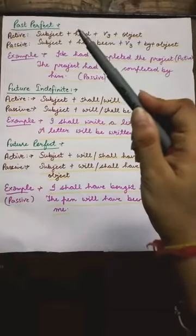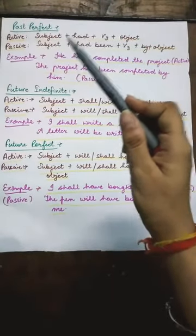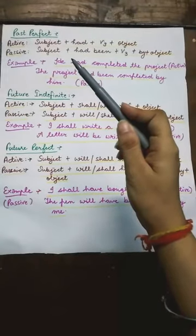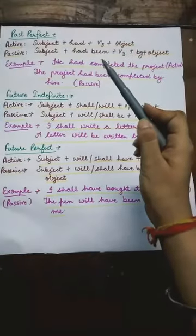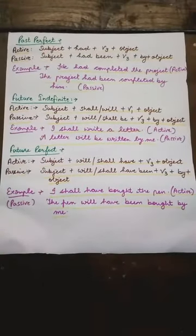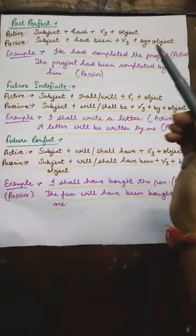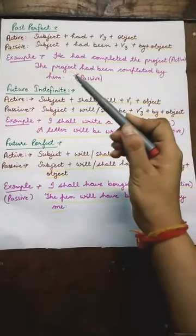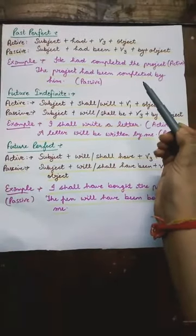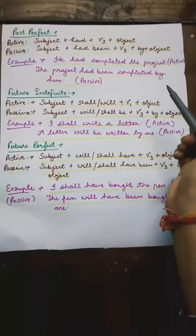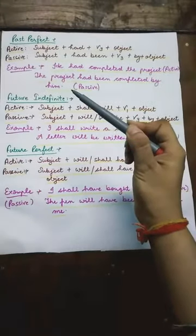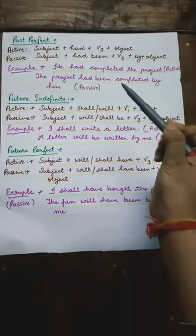The next tense is past perfect tense. Active sentence का rule होता है: subject + had + third form of verb + object. Passive में: subject + had been + third form of verb + by + object. Example: 'He had completed the project.' जो object given है वो passive में subject बन जाएगा. After that, 'had been' is written. Then verb की third form. Then 'by', He changes into him. So: 'The project had been completed by him.'